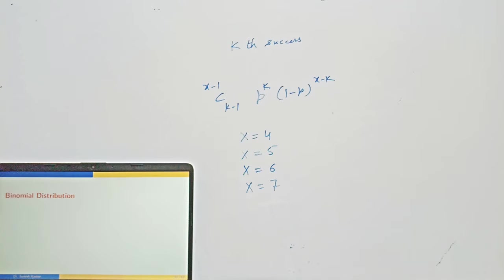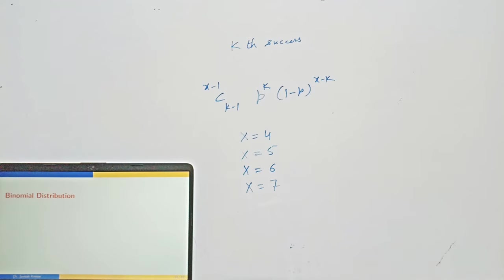So the negative binomial distribution is more general than the geometric distribution. In geometric distribution you need the first success, but in negative binomial it is the kth success, so at least k trials are required.